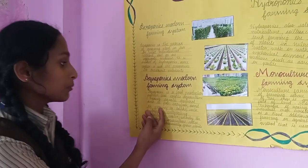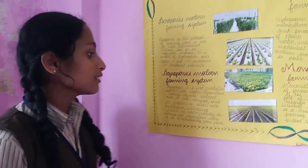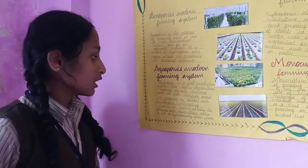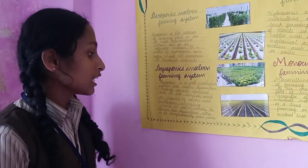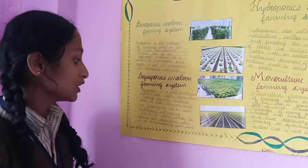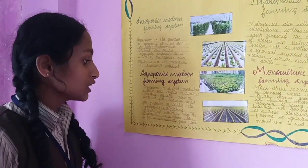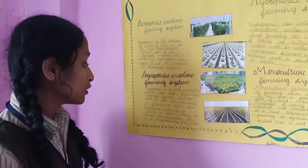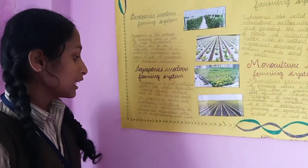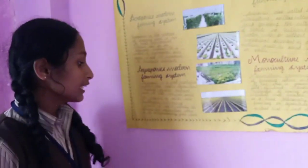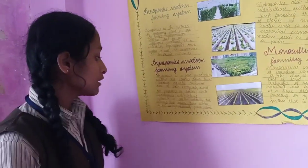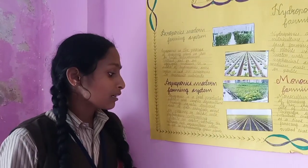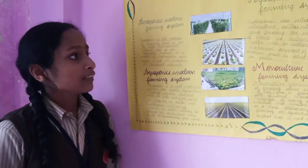Next is the aquaponics model. Aquaponics is a production system that couples aquaculture — raising aquatic animals such as fish, sea fish, or snails — with hydroponics, the cultivation of plants in water. In the system, aquaculture water is fed to hydroponically grown plants.